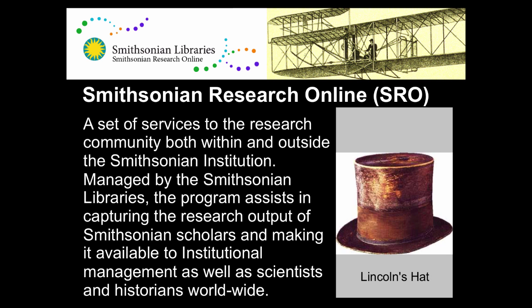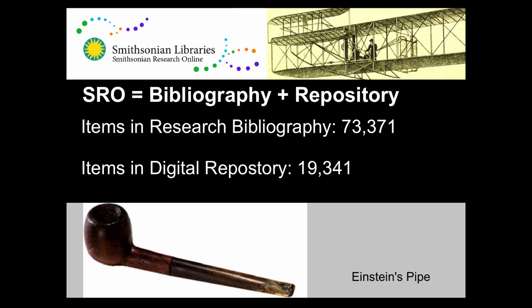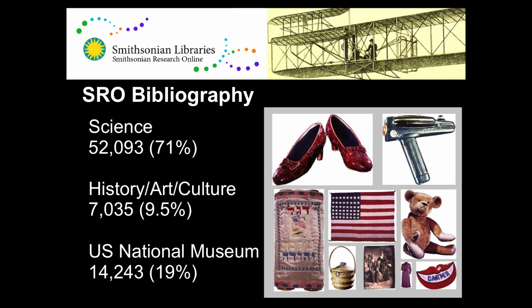The Smithsonian Research Online was built to include a number of different systems and services that provide access to that information, as well as reports and services that flow back. It's comprised of two main portions: a research bibliography with a little over 73,000 to 74,000 titles, and the digital repository — a more traditional institutional repository element with about 20,000 objects. The Smithsonian encompasses all different types of research, but within the quantity of scientific publications, science does tend to dominate, as these recent statistics showing the breakdown between science, history, art, and culture confirm.